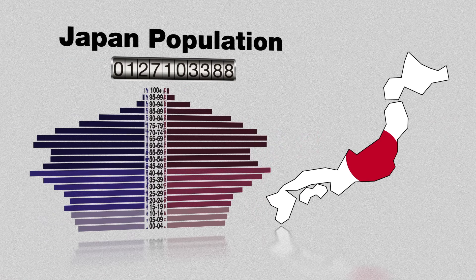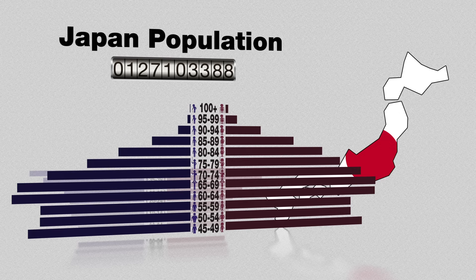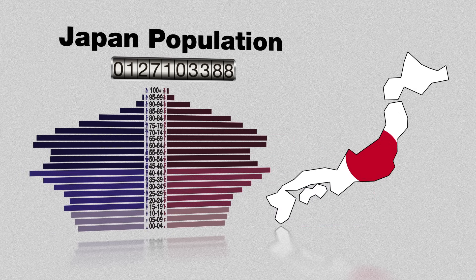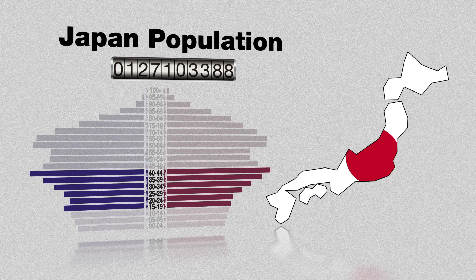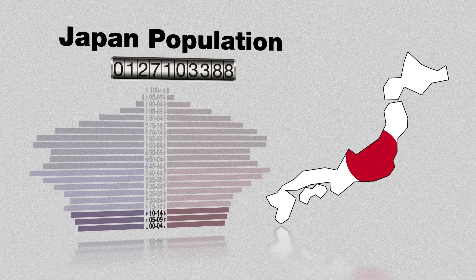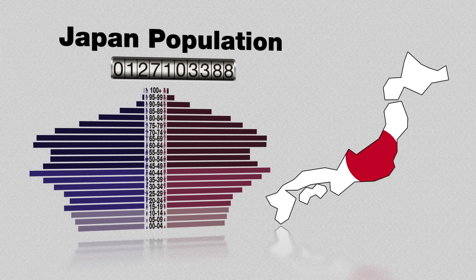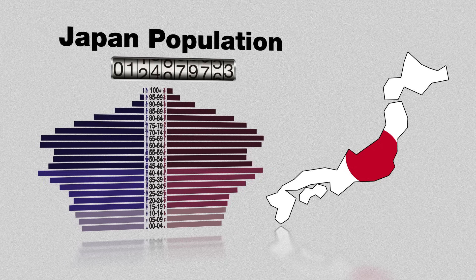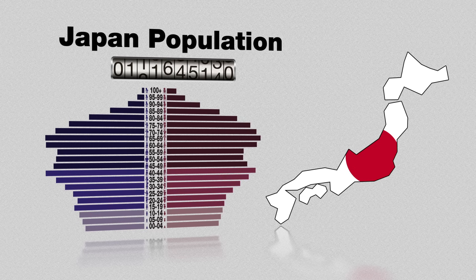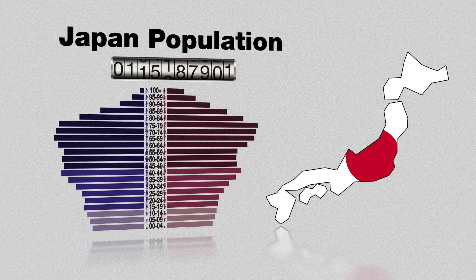Finally, let's look at Japan. Because the majority of its population is in its post-reproductive years, and the number of people is smaller at each younger interval, this means that at current rates of reproduction, the population will begin to decline as fewer and fewer people reach reproductive age.